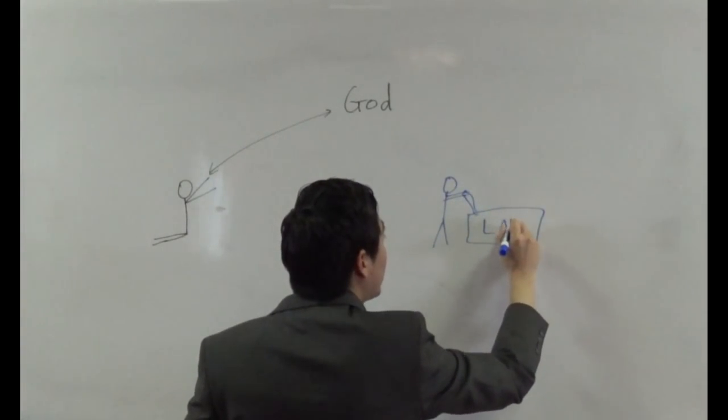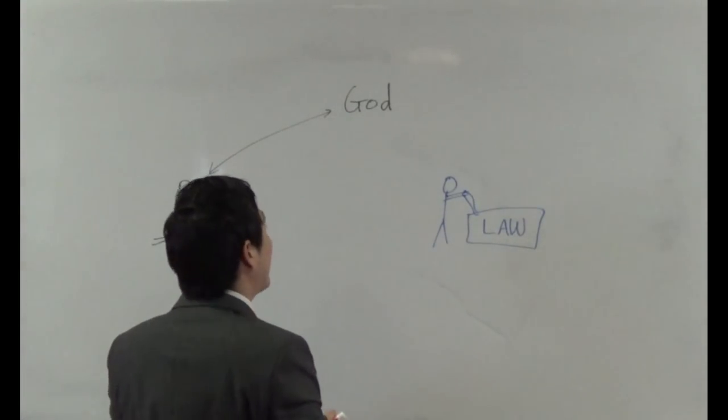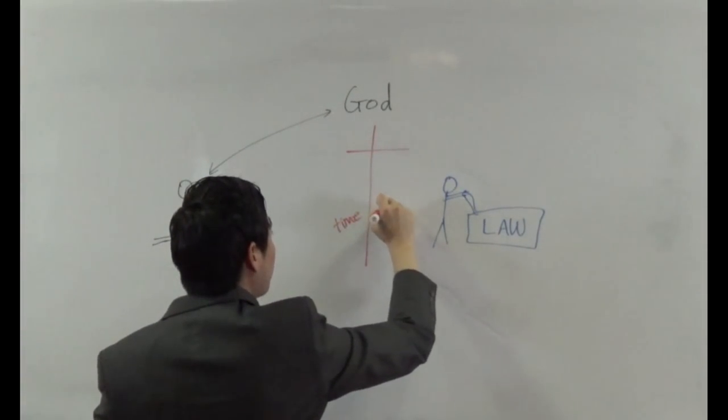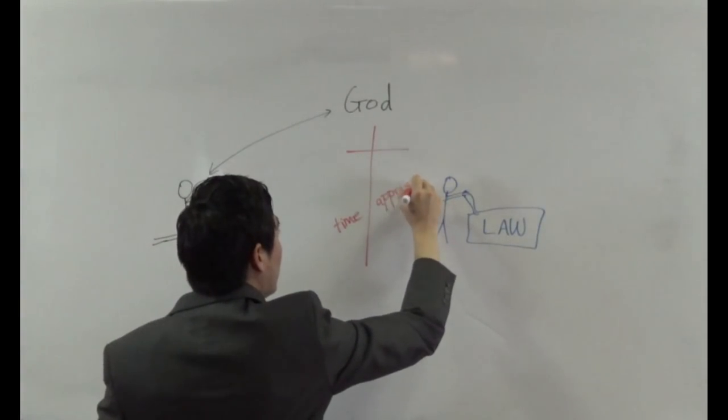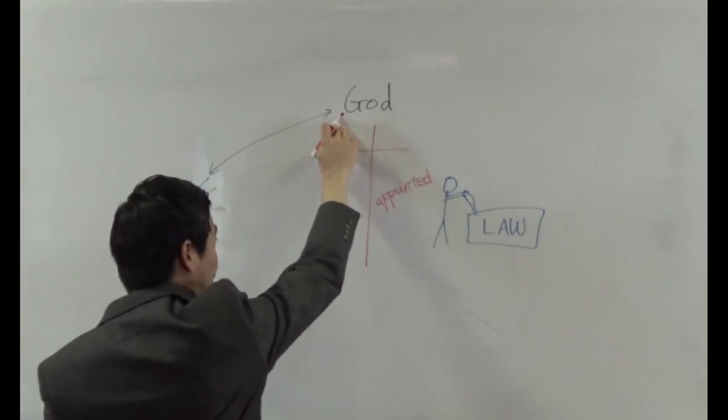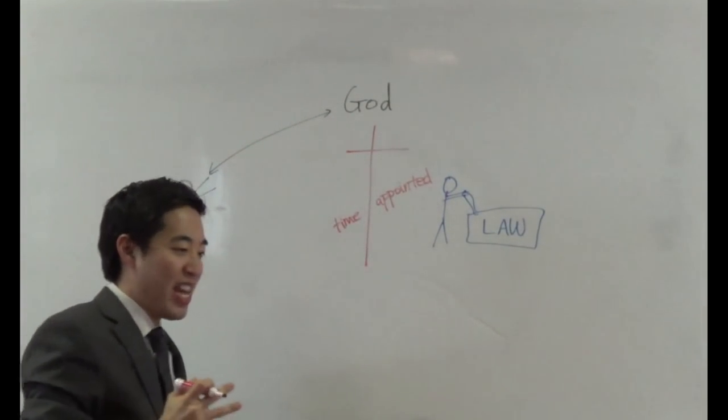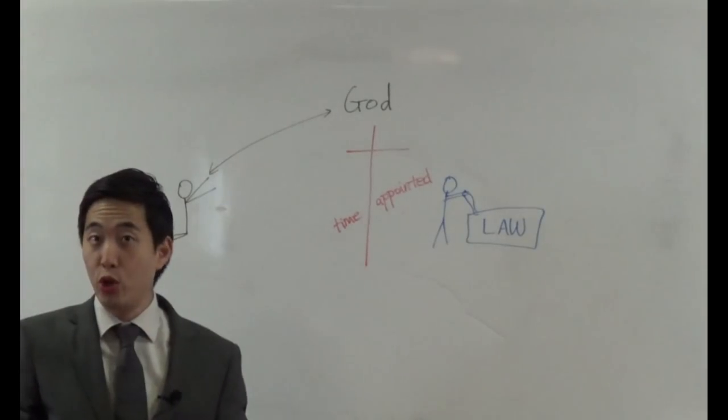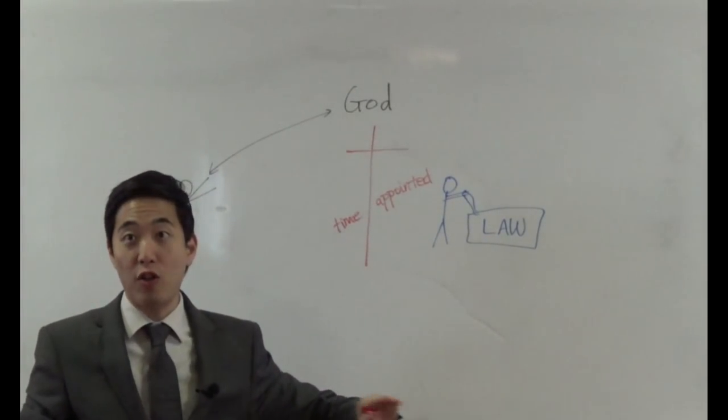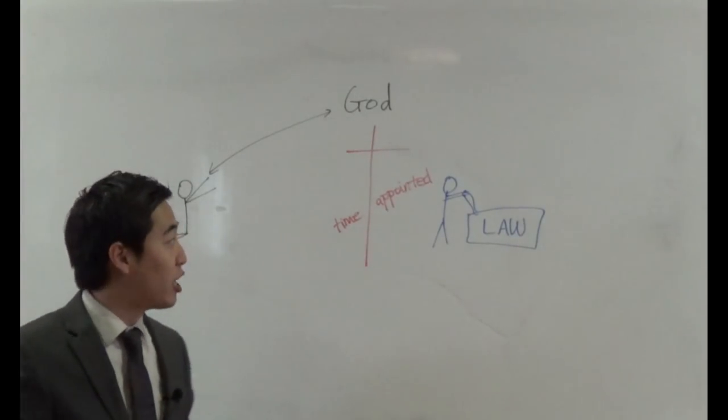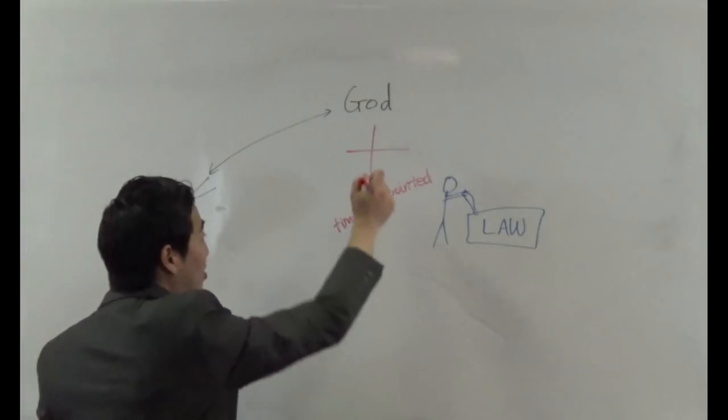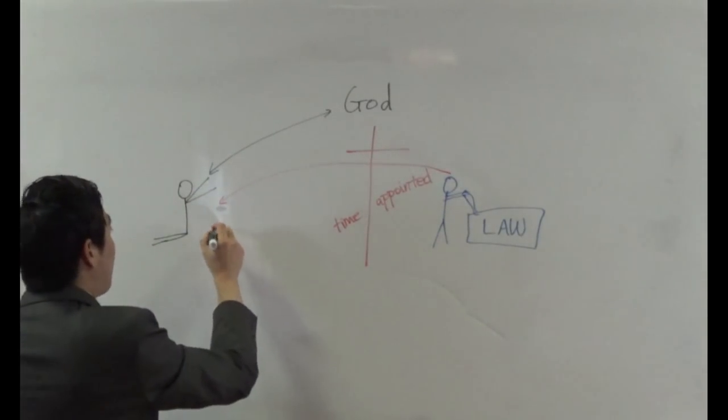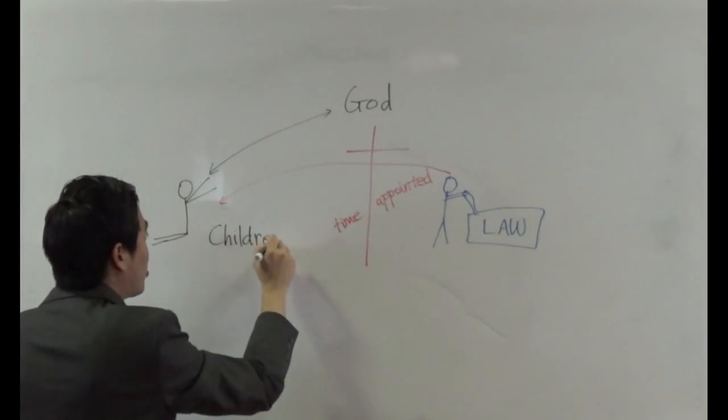We were a servant before, and as a servant we were held in captivity to the law. But remember, the Lord Jesus Christ died on our behalf, and he was known as the time appointed. Because of this time appointed, when a child is going to inherit something from the father before he becomes the heir, he is in a position of servanthood to the laws and rules of his father's household. So once you cross over this time appointed, then you get into this position of being adopted children heirs.